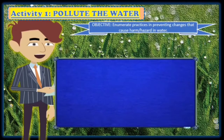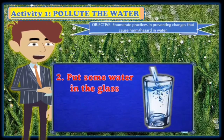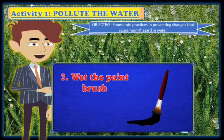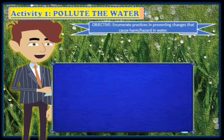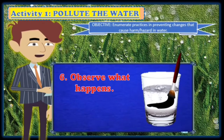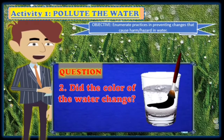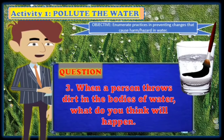Let's have an activity. Activity one is 'Pollute the Water.' The objective is to enumerate practices in preventing changes that cause harm or hazard in water. First, get a clear glass. Number two, put some water in the glass. Number three, wet the paint brush. Number four, brush the black watercolor. Number five, put the brush in the glass with water. Number six, observe what happens. Then answer these questions: What happened to the water after you put the brush inside? Did the color of the water change? When a person throws dirt in bodies of water, what do you think will happen?